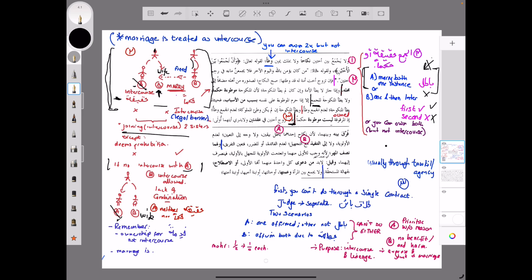Li anna al-nikaha ahadayhima batilun bi-yaqin - we know that one of the two is invalid, without a doubt. You can't have both at the same time, so one is definitely void. Wa la wajha ila al-ta'yin - but we can't decide which one. We don't have a way of knowing which one did he marry first. Li adam al-awlawiyya - we don't know which one he married first. Wa la ila al-tanfidhi ma'a al-tajhil - and even if we try to do something where we just kind of do some guesswork, it's done with jahala, it's done with ignorance. And we don't like that as jurists, we don't like to just speculate.